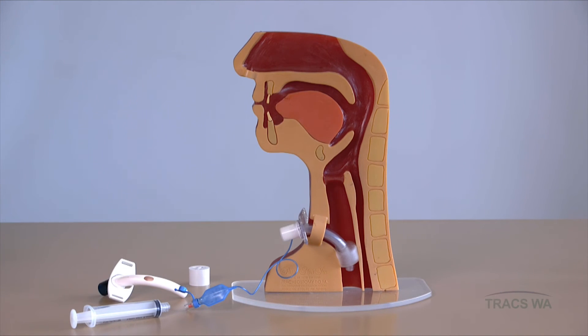In a normal airway, inhalation and exhalation occur through the mouth and nose. When a tracheostomy tube is introduced, air passes in and out through the tube and bypasses the upper airway, mouth and nose.